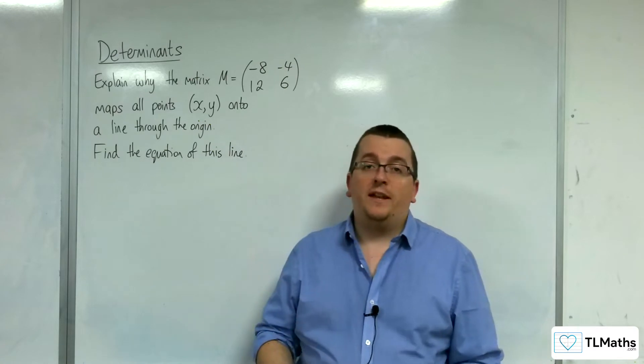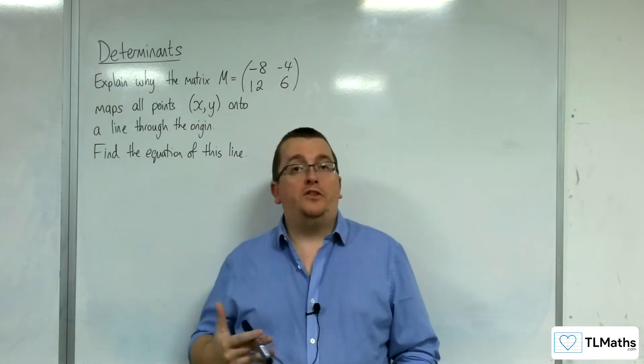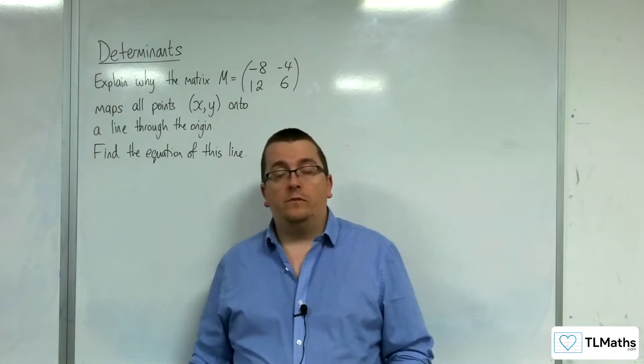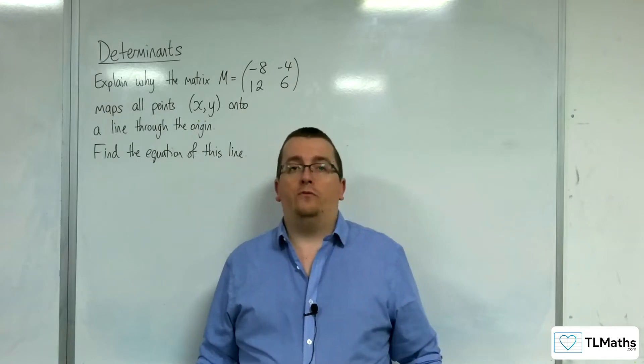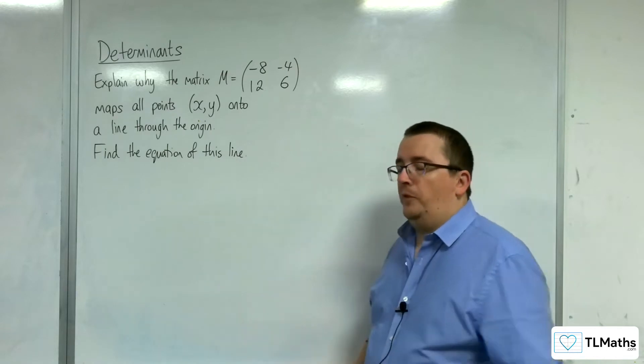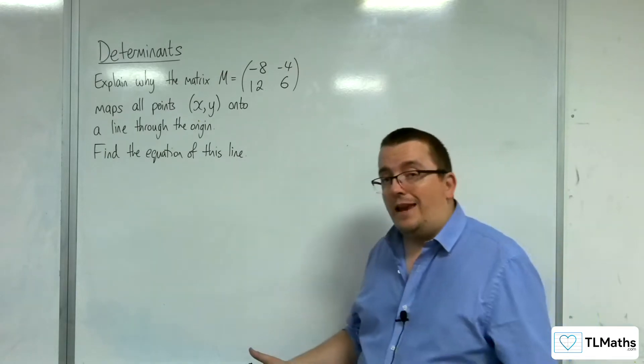In the previous video, we investigated if the determinant of a 2 by 2 matrix is 0, then it would map all points onto a line going through the origin. And we saw that for a specific example, and this is the case in general.